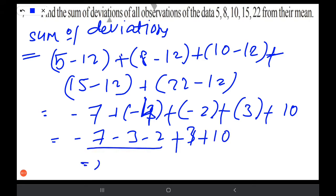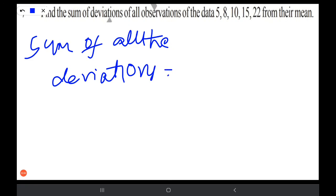This becomes minus 13 plus 13. So both get cancelled. Zero is the answer. Zero is nothing but the sum of all the deviations. That we got zero. This is the answer.